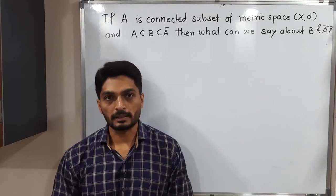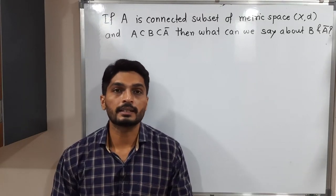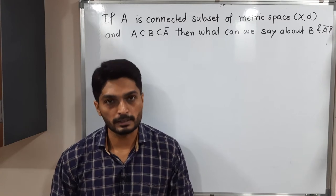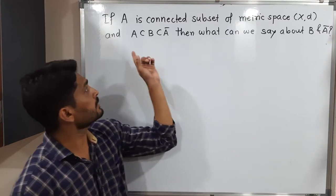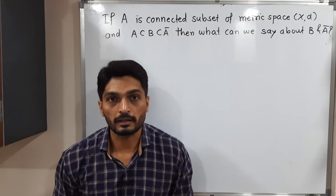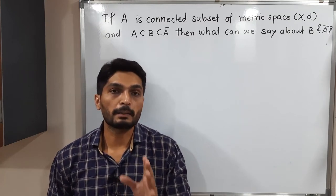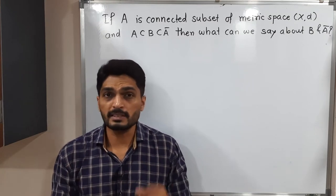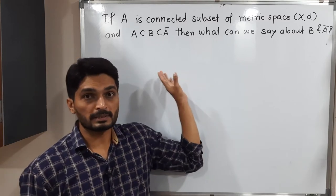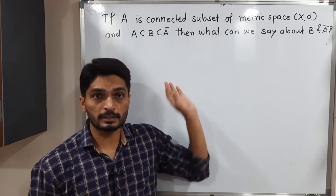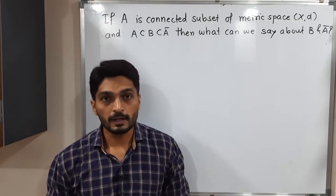Let us discuss this example. We have A as a connected subset of a metric space. It is given that A ⊆ B ⊆ Ā. Then we have to conclude about Ā and B — if A is connected, can we say Ā and B are both connected, given the inclusion relation A ⊆ B ⊆ Ā?